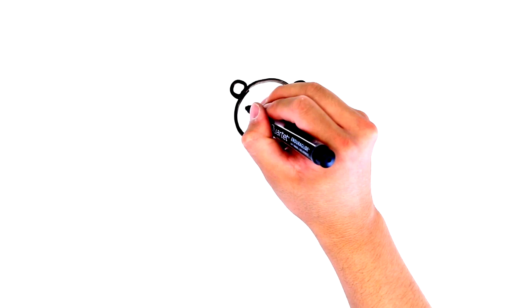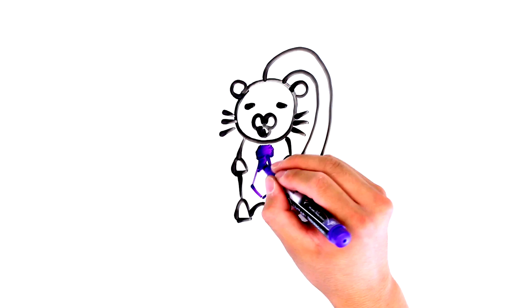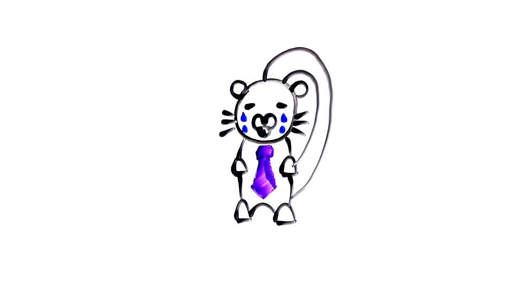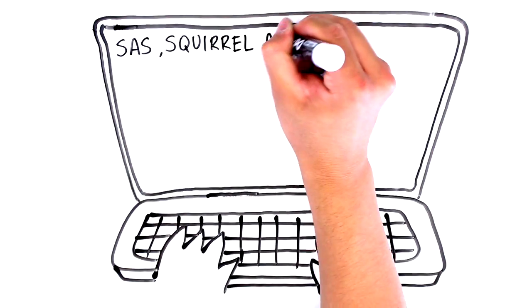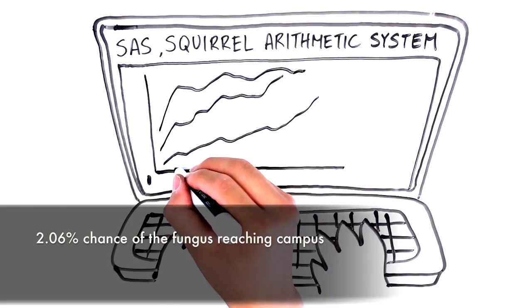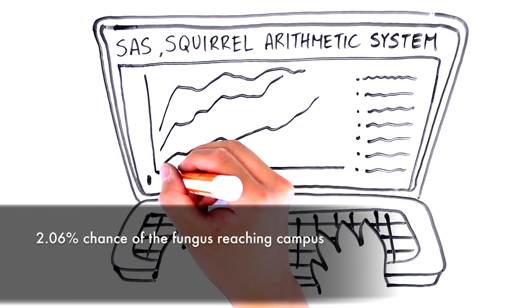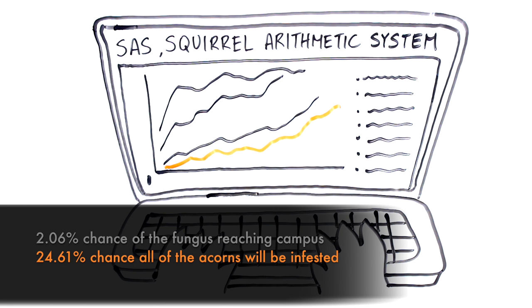Consider the following example. Grammar Squirrel's friend has just given a presentation about a potentially worrying development in British Columbia and tells Grammar Squirrel that it went really badly. A new fungus is spreading rapidly throughout the province. And, mathematical models predict that there is a 2.06% chance of it reaching the university campus. If it does, there is then a 24.61% chance that it will infest all the acorns on the ground, in which case there would be no food for the winter.